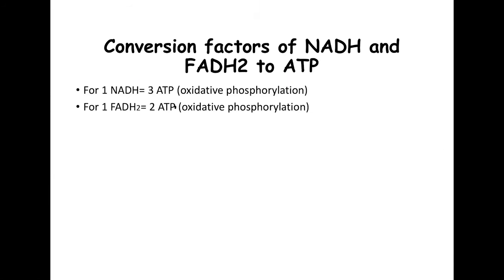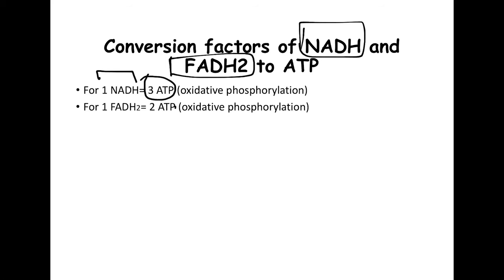Now let's talk about conversion factors. For every NAD that is reduced, approximately three ATPs can be made through oxidative phosphorylation. For every FAD that is reduced, approximately two ATPs are produced through oxidative phosphorylation.